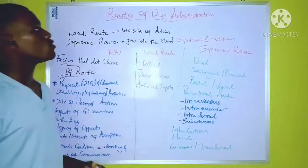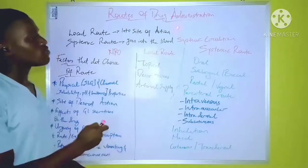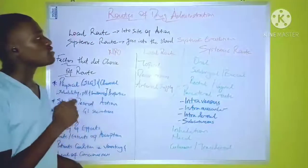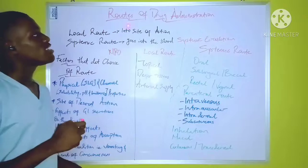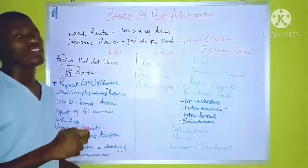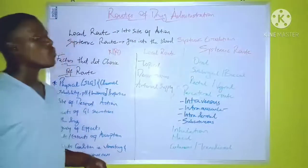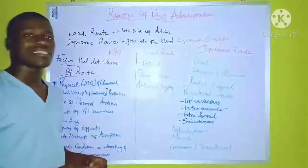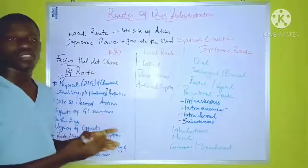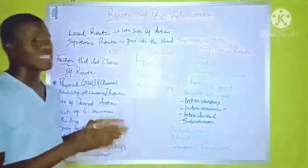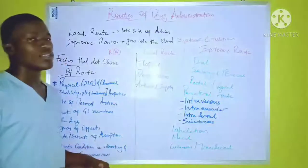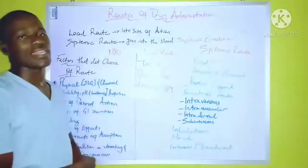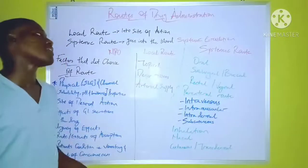Now we'll move on to the various routes of drug administration. The first one is the local route. The local route involves the administration of the drug into the site of action or on the desired site of action. One important thing about the local route is that it has a decreased tendency for adverse effects because the concentration of the drug in the blood is low, and the drug acts only on the sites where it is administered.